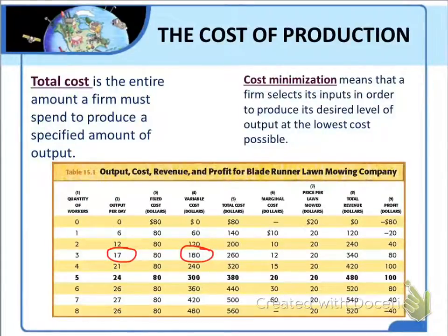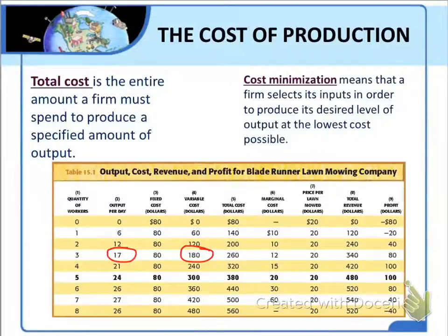In the long run, mowers become a variable input for Blade Runner. Then, cost minimization involves selecting the cheapest combination of mowers and workers to mow any given number of lawns. But for now, we are considering the firm's cost in the short run, when Blade Runner cannot adjust the number of mowers.